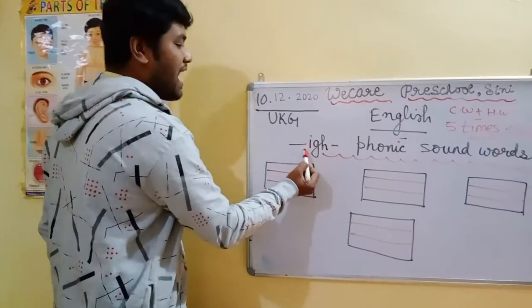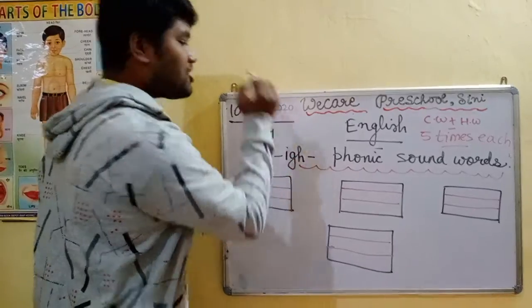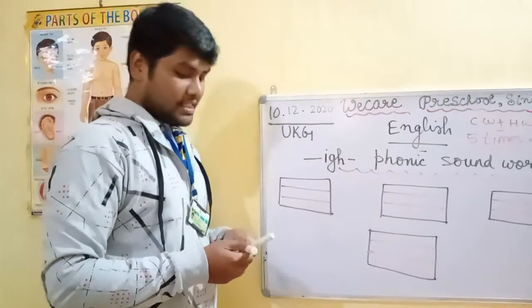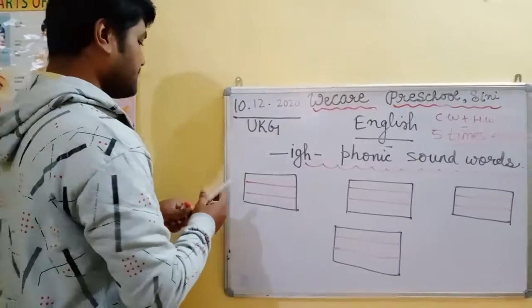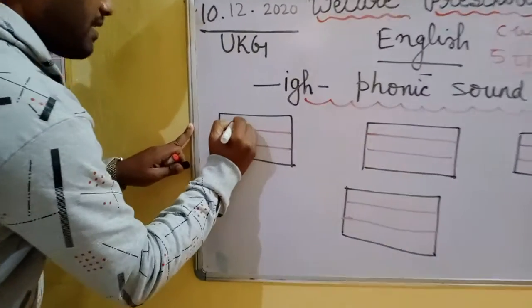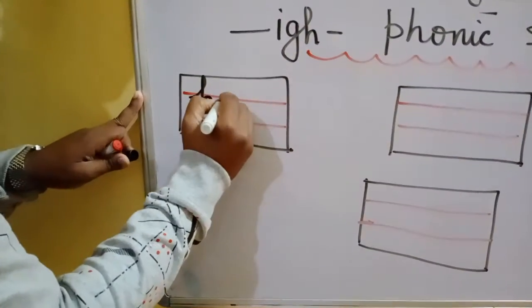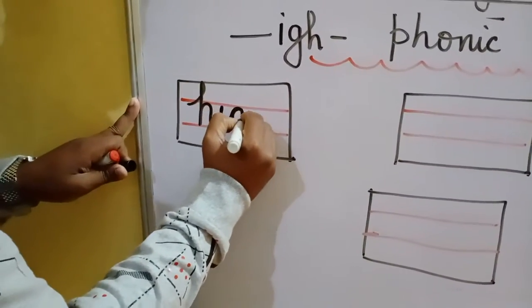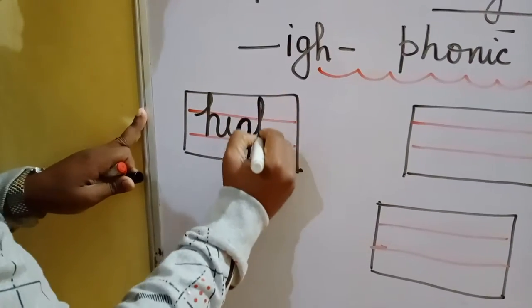Is type ke words mein IGH hote hain. As a word, is mein IGH hote hain. Let's start. Write like this — I, G and H.